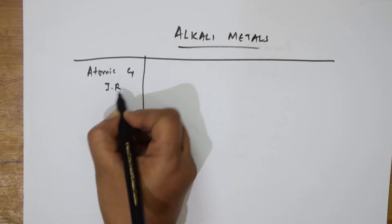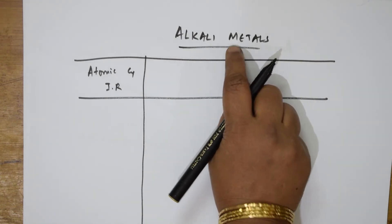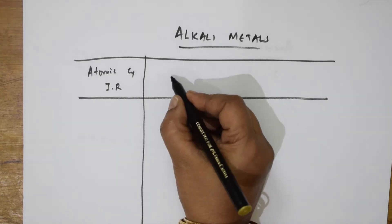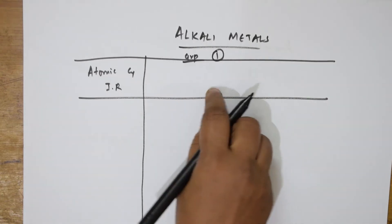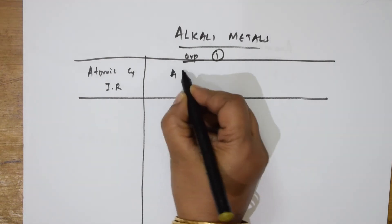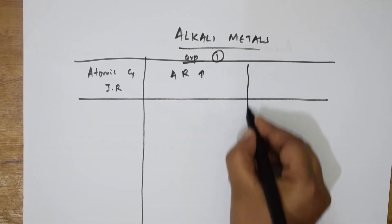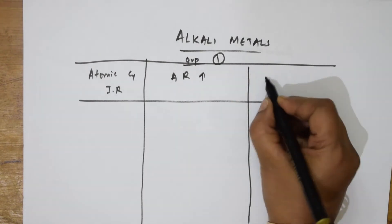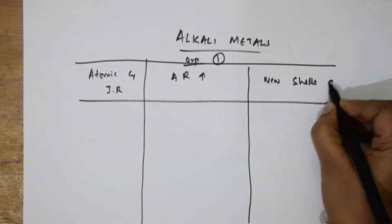When speaking about atomic and ionic radii in alkali metals — lithium, sodium, potassium, rubidium, cesium, and francium in a group — atomic radii increase going down the group. Why does it increase? Because in a group from top to bottom, new shells are added. In group 13, boron and aluminium are present; group 14 has silicon.